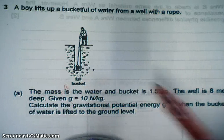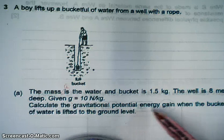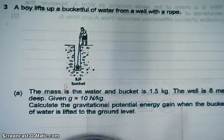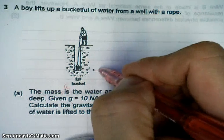Now the question is calculate the gravitational potential energy gain when the bucket full of water is lifted up to the ground level, which is lifted up from here to here.